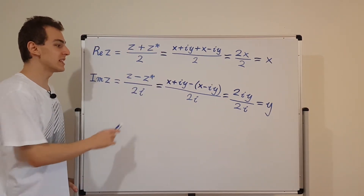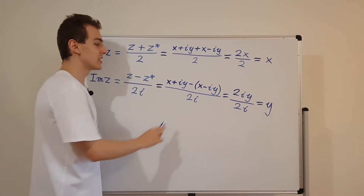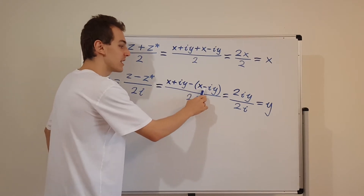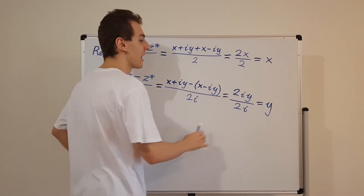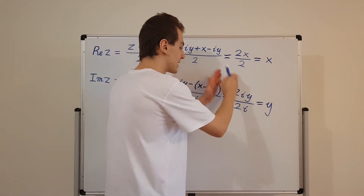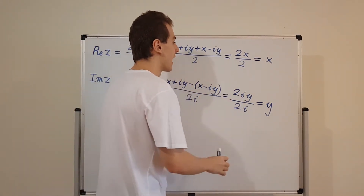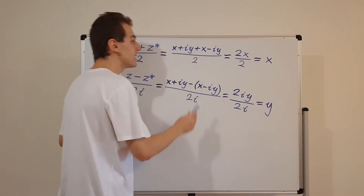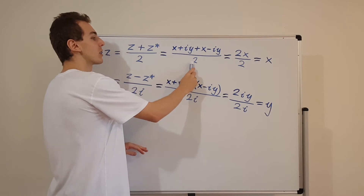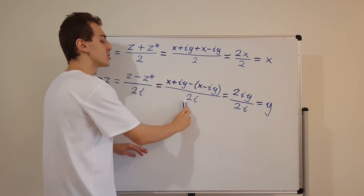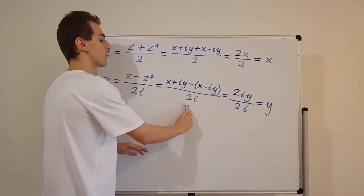So we've seen algebraically that both expressions work. We substituted in the Cartesian form, observed the cancellations, and that explains where the factor of 2 and the factor of 2i come from.